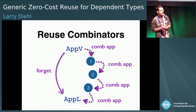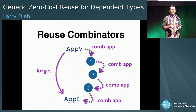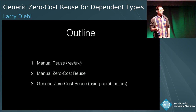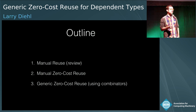As an illustration of using the reuse combinators, instead of just defining list append in terms of vector append manually and directly, we want to incrementally apply combinators that give us sub-goals until we eventually reach our solution. For the rest of the talk, I'm going to review manual reuse, then go over manual zero-cost reuse, and finally give some intuition behind the generic development.